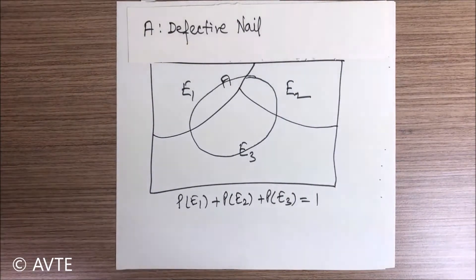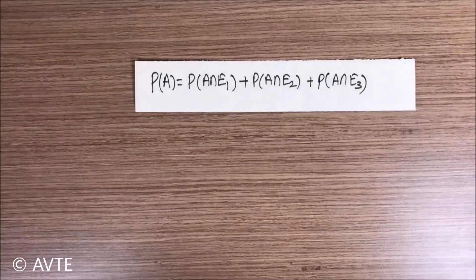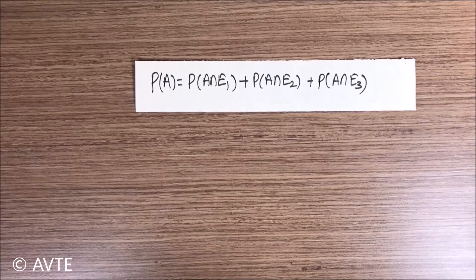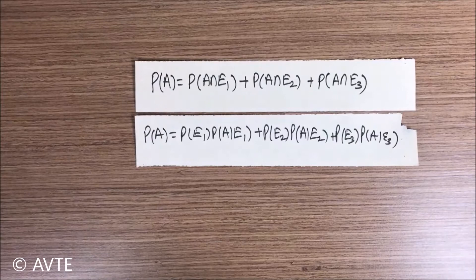To find the probability of A, you can see it makes intersections with E1, E2, and E3. So P(A) = P(A ∩ E1) + P(A ∩ E2) + P(A ∩ E3). We have the conditional probabilities rather than the intersections directly, so we break the intersections using the conditional probability formula: P(A) = P(E1)·P(A|E1) + P(E2)·P(A|E2) + P(E3)·P(A|E3).